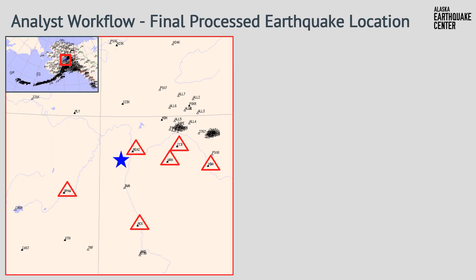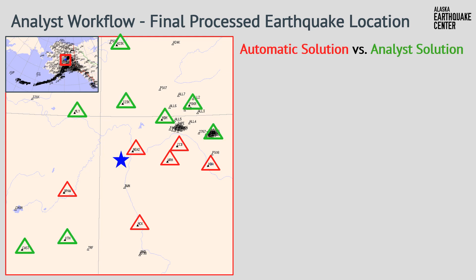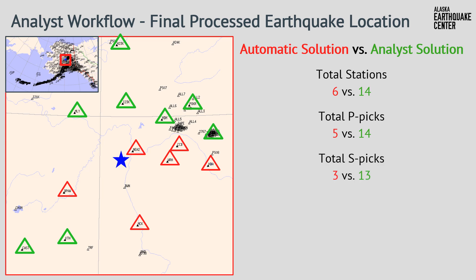Finally, we have an analyst-reviewed solution that includes information from the automatically generated solution as well as additional arrivals added at stations outlined by green triangles. Comparing the solutions side by side, the analyst solution includes 14 stations while the automatic solution included six. There are nearly three times more P arrivals picked in the analyst solution than in the automated solution. The depth of the earthquake has changed slightly, and the magnitude has changed a fair amount — in the automatic solution, the magnitude was calculated to be 1.4, whereas in the analyst solution it is calculated to be 0.8. The increase in the number of S arrival picks in the analyst solution helps refine the magnitude calculation.